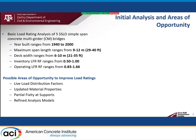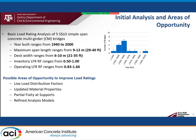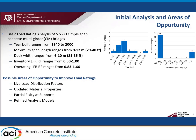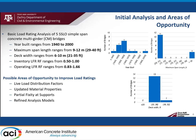Basic load rating analysis of 5 SSLO simple-span concrete multi-girder bridges was performed to identify possible areas of opportunity to improve load ratings. The year the bridges were built ranged from 1940 to 2000. The maximum span length lay between 29 to 40 feet, with deck widths ranging from 21 to 35 feet. The LFR rating factors for these bridges lay between 0.5 to 1 for inventory rating and 0.83 to 1.66 for operating rating. It was identified that live load distribution factors, in-situ material properties, partial end fixity, and refined analysis methods are possible areas of opportunity to improve load rating.